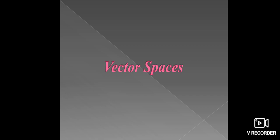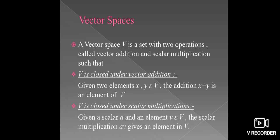First, see the vector spaces. A vector space V is a set with two operations called vector addition and scalar multiplication, such that V is closed under vector addition. It means, take any two elements or vectors in vector space V, namely X and Y, and add these two elements. X plus Y is also an element in vector space V.